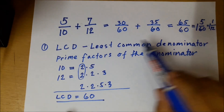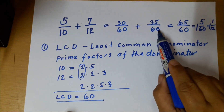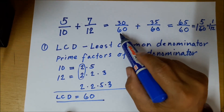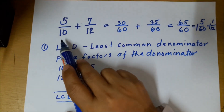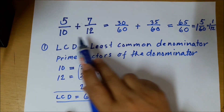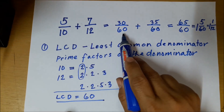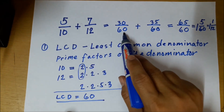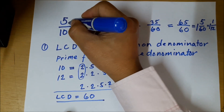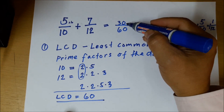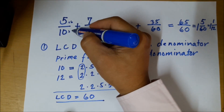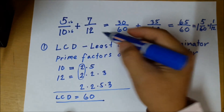We've written 60 and 60 as the denominators. Now how did we get 30 on top of the first fraction? We multiply the numerator by the number used to multiply 10 to get 60. Since 10 times 6 is 60, we also multiply the numerator 5 by 6, giving us 30. It's like multiplying the numerator and denominator by 6 over 6, which equals 1, giving us 30 over 60.